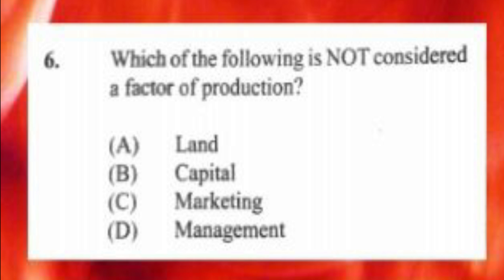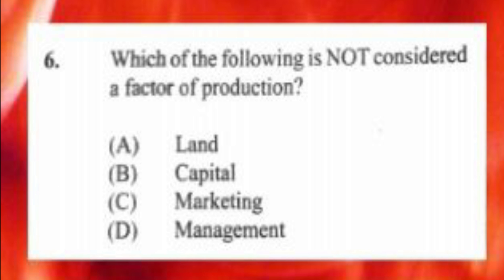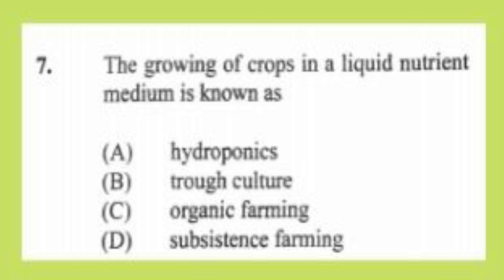Question number six: which of the following is not considered a factor of production? A) land, B) capital, C) marketing, D) management. The answer is C, marketing. The missing factor is labor. Question number seven: the growing of crops in a liquid nutrient medium is known as A) hydroponics, B) throughput culture, C) organic farming, D) subsistence farming. The answer is A, hydroponics.